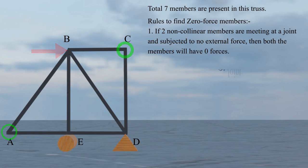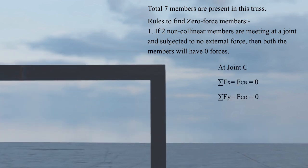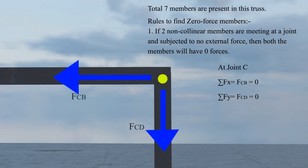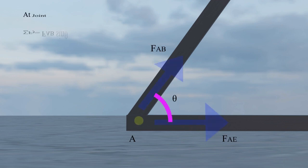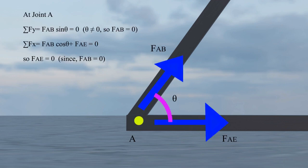Consider joint C. Here summation of Fx equals FCB which is equal to zero, and similarly summation of Fy equals FCB which is also equal to zero. At joint A, summation of Fy equals FAB sin θ equals zero. Since sin θ cannot equal zero, FAB equals zero. Taking summation of forces in the x-direction, FAE plus FAB cos θ equals zero. Since FAB is already zero, FAE also equals zero.